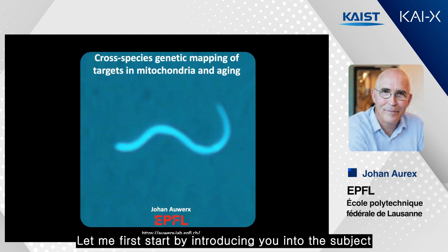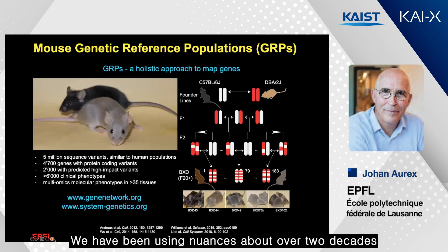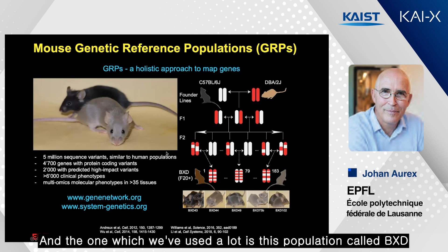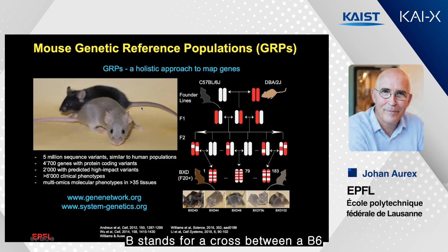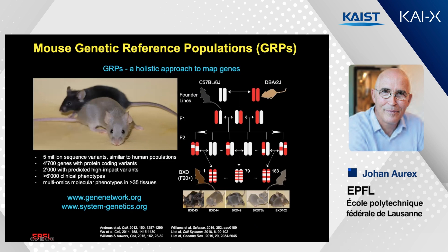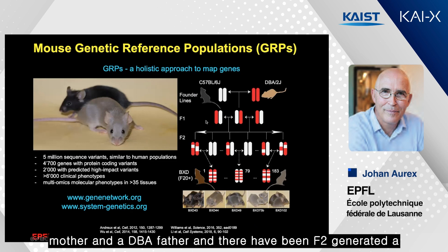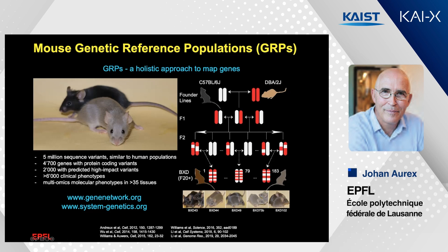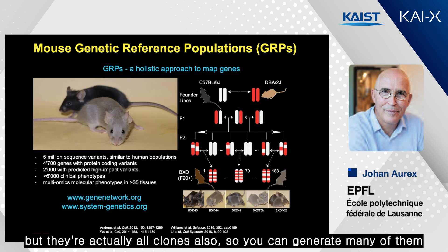Let me first start by introducing you to the subject. We have been using, for over two decades, mouse genetic reference populations, and the one we've used a lot is called BXD. B stands for a cross between a B6 mother and a DBA father. F2s were generated a long time ago, about 40 years ago, and now there are about 185 of these mouse strains available. They're all genetically distinct, but they're also all clones, so you can generate many of them.